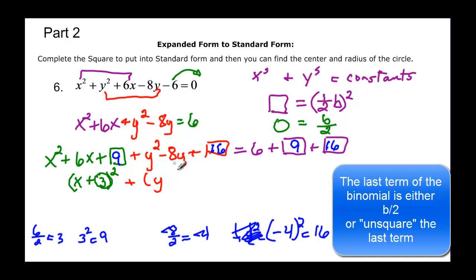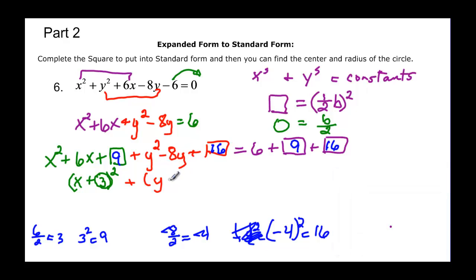And I either take half of the 8 to know what I'm going to add, or unsquare the 16. But it's better to take half of the negative 8 so you get the right sign. So half of the negative 8 is minus 4, and then we're going to square that. And then we just add all this up.